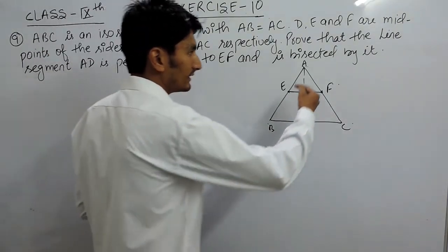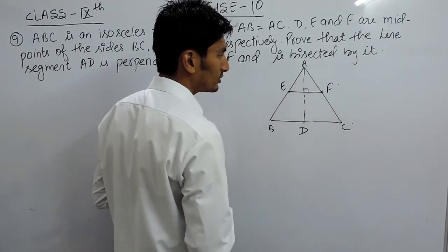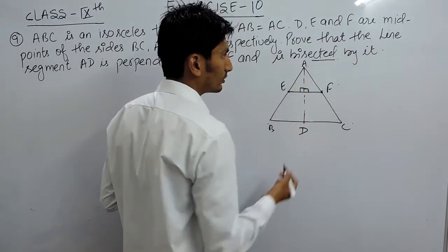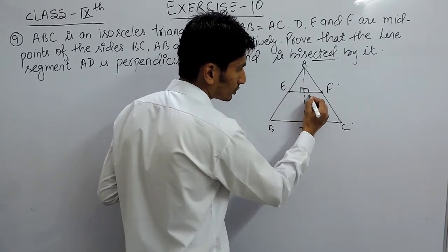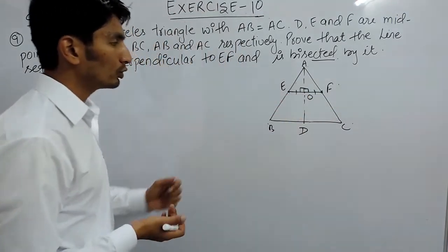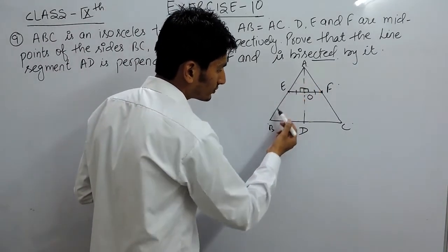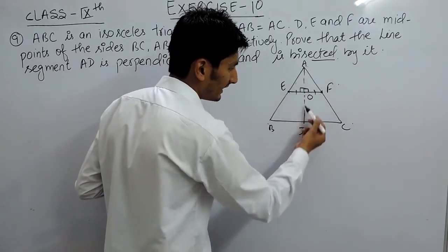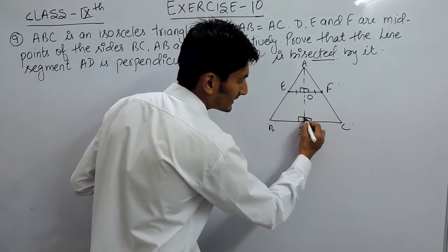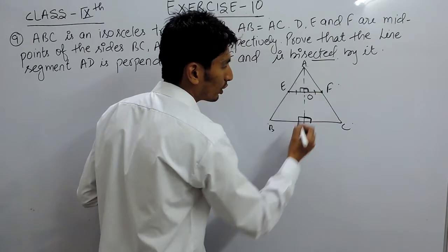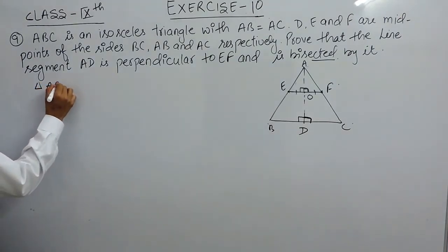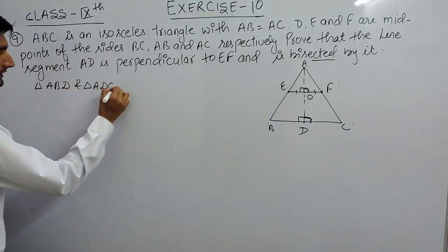That means you have to prove that these two angles are 90 degrees — only then will AD be perpendicular to EF. When we talk about bisecting, if this point is O, then you have to prove that AO equals OD. To do so, we first prove triangle ABD and triangle ADC are congruent, then use parallel lines to show the angle is 90 degrees, and then prove bisection.